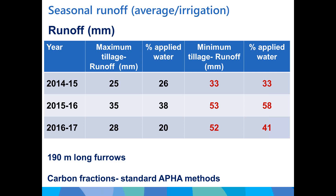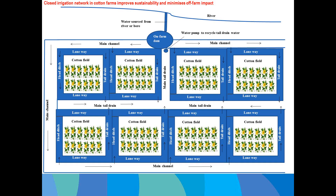Carbon fractions in runoff samples were analysed using the American Public Health Association standard method. Importantly, water leaving cotton farms does not move off-farm — the farm layout is designed so that most runoff is recirculated back into on-farm storage during both irrigation and rainfall events. Except during major flooding, water is recirculated and stored on-farm, minimising off-farm nutrient movement and transport.